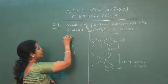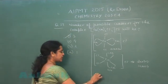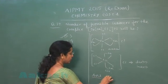So total number of isomers should be 3. So correct answer is first option.